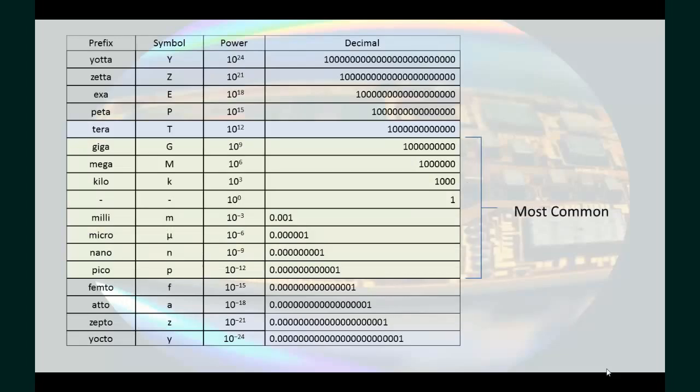Most commonly, we use prefixes of giga down to pico, which is 10 to the positive 9 down to 10 to the negative 12, although in computing tera, for instance, for 10 to the positive 12 is becoming fairly common.